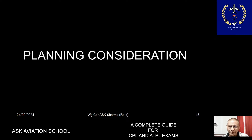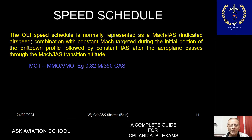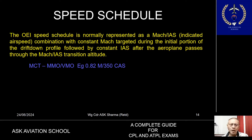Whenever the aircraft suffers an engine failure, for planning purposes the operator must provide a speed schedule. This speed schedule is used for planning, and in the event of one engine failure the aircraft will be flown with a thrust rating of MCT with this speed schedule. The speed schedule may be expressed in terms of Mach number, IAS, CAS, or a combination of Mach number and CAS or IAS.